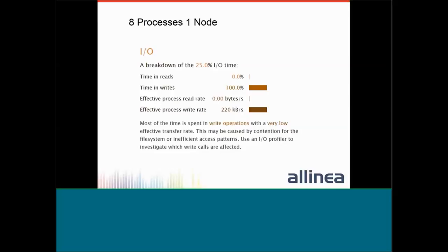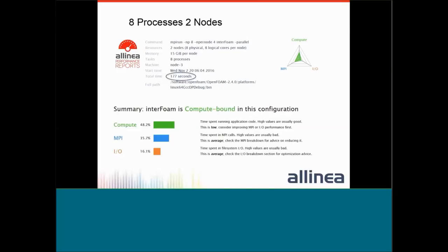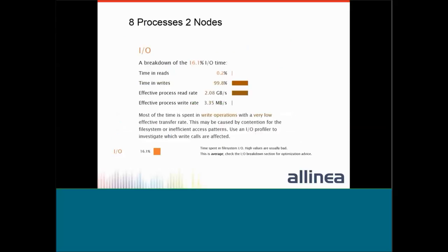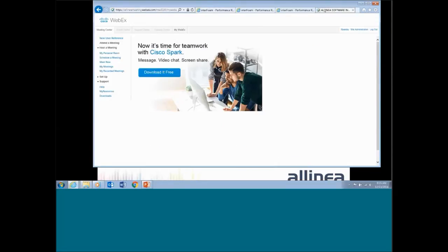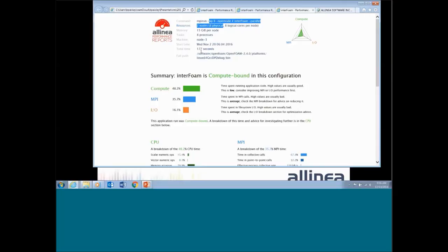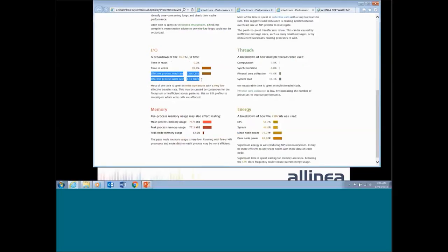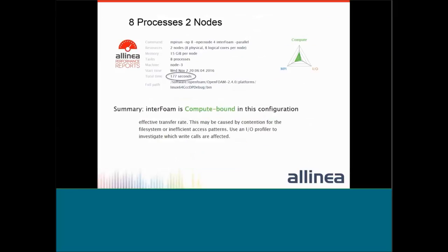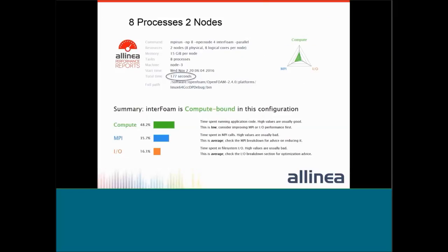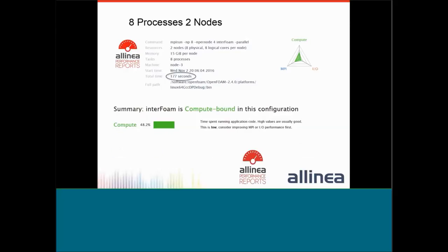Looking at the I/O — which is step two or three on the performance roadmap — we can now see the write rate is very low. So let's go to eight processes across two nodes. Looking at the output from that: eight processes, two nodes, and the write rate is looking quite a bit better. But our entire throughput time has gone up — from 131 seconds back up to 172 to 177 seconds — actually worse than our four-process, one-node configuration.